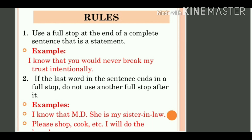Second rule: if the last word in a sentence ends in a full stop, do not use another full stop after it. Means, अगर कोई भी sentence ऐसा है जो abbreviation के बाद end हो, और abbreviation क्या होती है — words की shorter form होती है. Words को shorter form में लिखने के लिए हम उनके बीच में और end में full stop mark लगाते हैं. तो अगर sentence already एक full stop से end हो रहा है, तो उसके बाद दोबारा full stop की need नहीं होती. For example, 'I know that M.D.' — M.D. का full form Doctor of Medicine है — तो D के बाद already एक full stop आ रहा है, इसके बाद हमें दूसरा full stop लगाने की need नहीं होती.